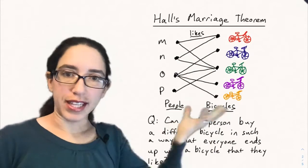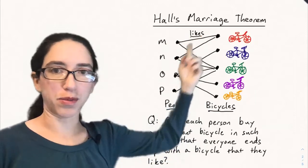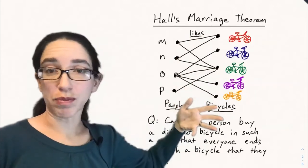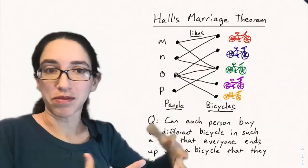And the question is, can each person buy a different bicycle that day so that everyone ends up with a bicycle that they all like? So let's look at these preferences. M has two possible choices, N has two possible choices. It might not always be possible. For instance, if they all wanted only the red bike, you wouldn't be able to find a matching.